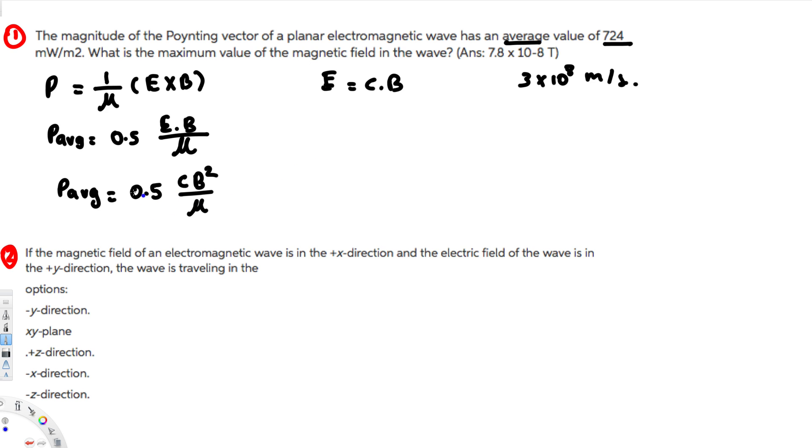So this is going to be, if I rearrange this, this is going to be B squared is going to be equivalent to P average times μ over 0.5 C, right? So this is B squared.